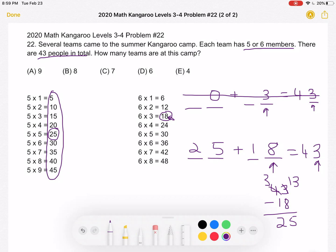So how many teams do we have? We have 5 teams of 5, and we have 3 teams of 6. So 5 plus 3 gives us a total of 8 teams, which is answer choice B. Thank you so much for watching, and please subscribe if you'd like to see more videos.